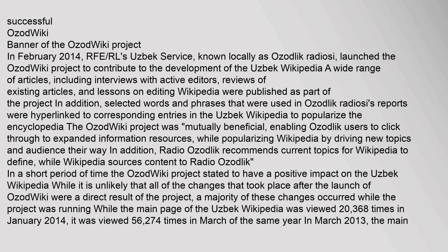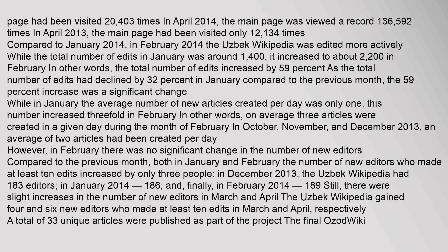The main page of the Uzbek Wikipedia was viewed 20,368 times in January 2014, and 56,274 times in March of the same year. In March 2013, the main page had been visited 20,403 times. In April 2014, the main page was viewed a record 136,592 times, compared to only 12,134 times in April 2013. In February 2014, the Uzbek Wikipedia was edited more actively: total edits in January were around 1,400, increasing to about 2,200 in February.